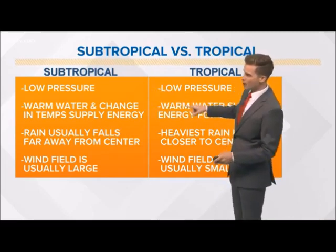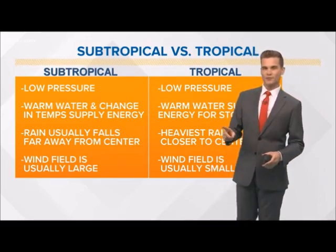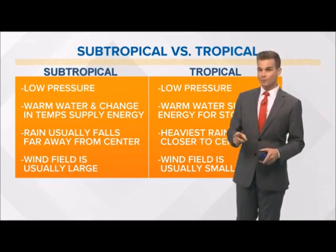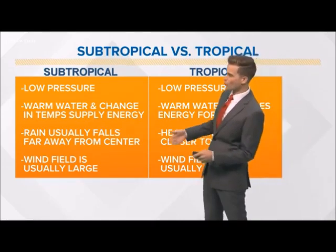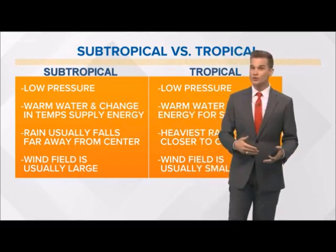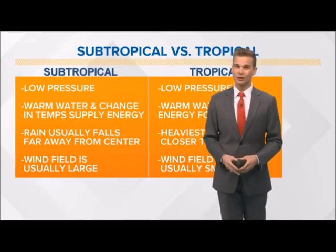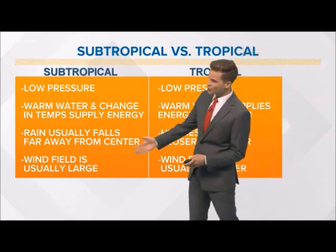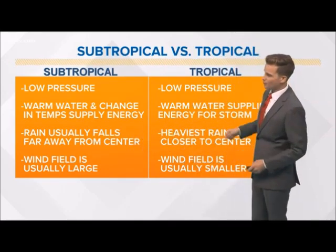They both feed off the warm water of the ocean, but one difference is that subtropical systems get their energy from other places as well as the warm water. Also, the rain is usually far away from the center of the storm. Subtropical systems are usually very lopsided, and their wind fields are usually a lot larger than a tropical system.